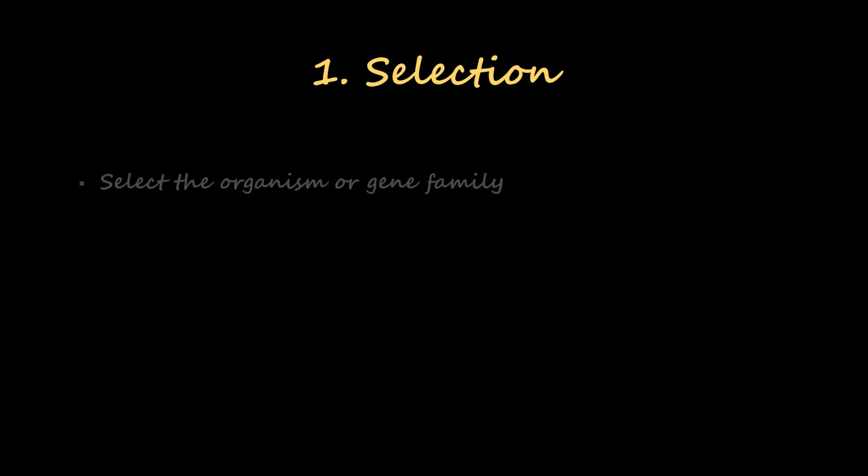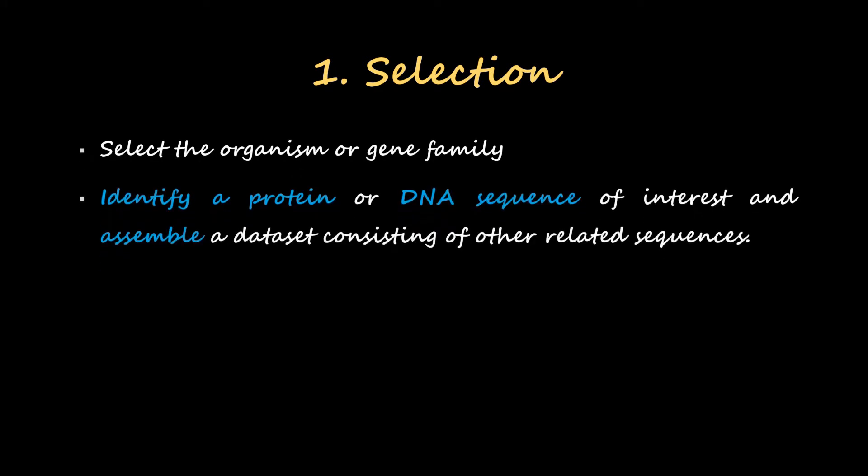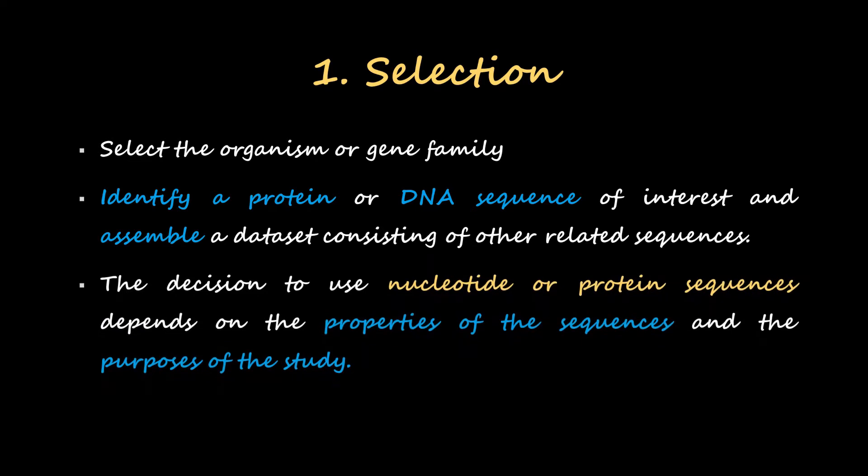First is selection. We select the organism or gene family, identify a protein or DNA sequence of interest, and assemble a dataset consisting of other related sequences. The decision to use nucleotide or protein sequences depends on the properties of the sequences and the purposes of the study. It is dependent on the user who is performing the experiment.